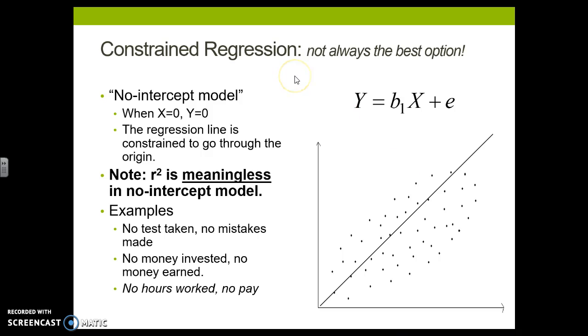You can also constrain a regression. Meaning you can force the line to go through 0. So if we look at this data, I would probably put the line a little bit more right here. But it is forcing it through 0. And the interpretation gets weird because the R is now meaningless because it's not necessarily a best fit line.